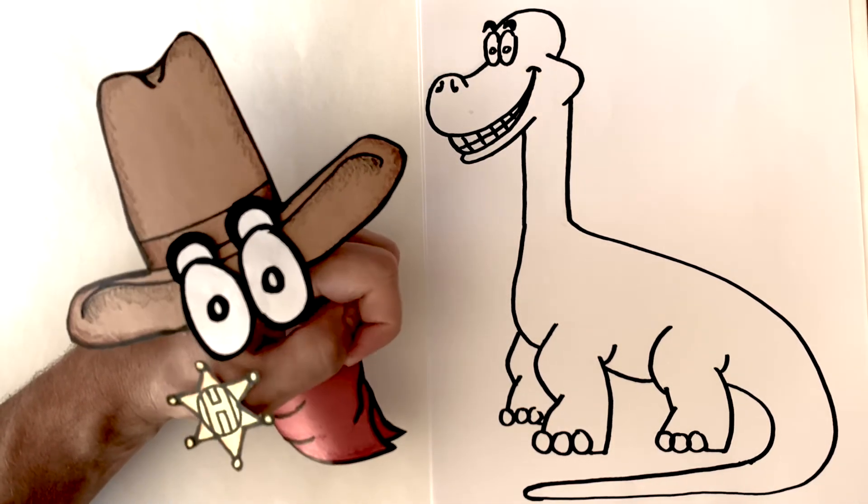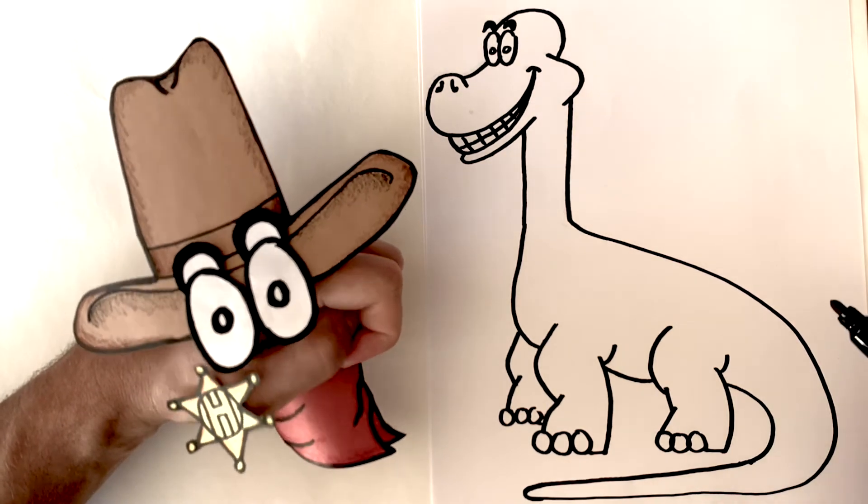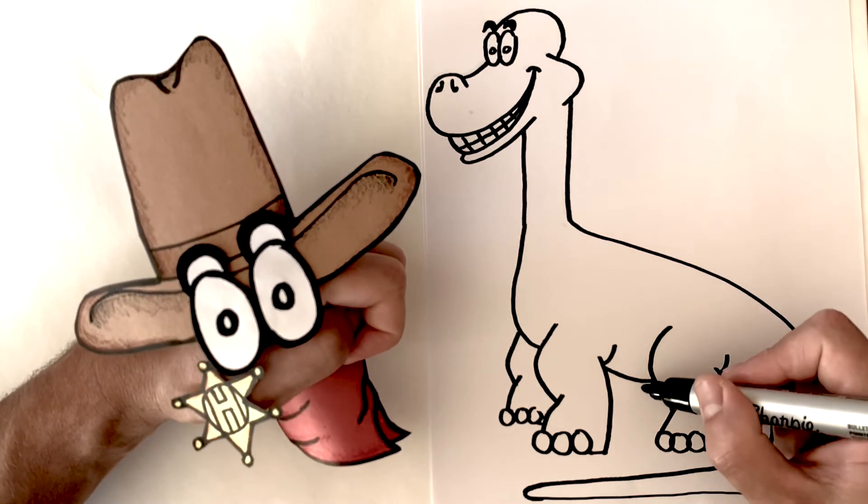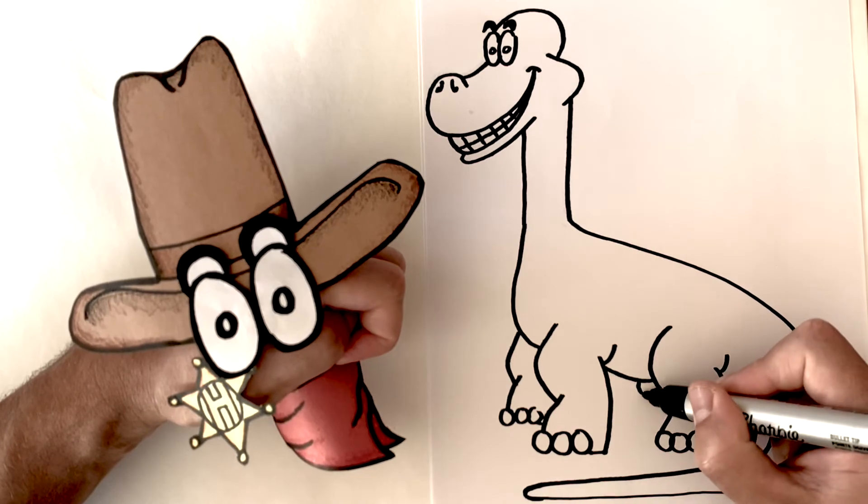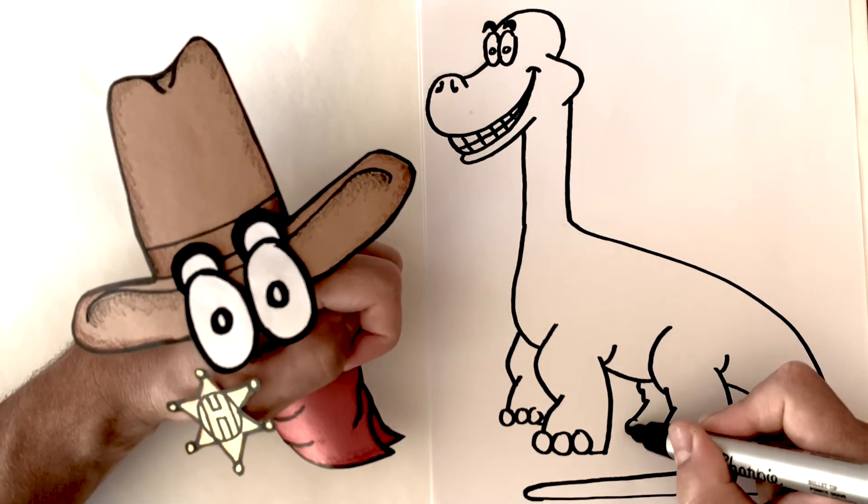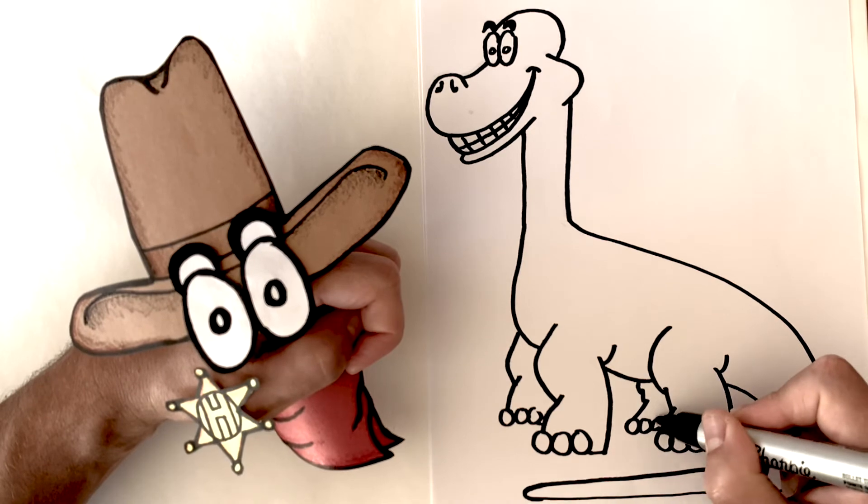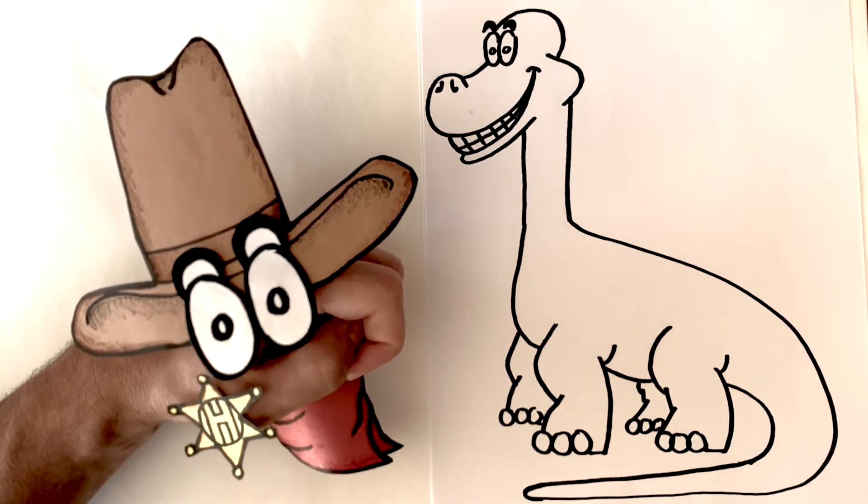We are almost done! Let's draw a couple lines to draw that back back leg like this. One, two, three. Circle, circle, circle. We're almost done.